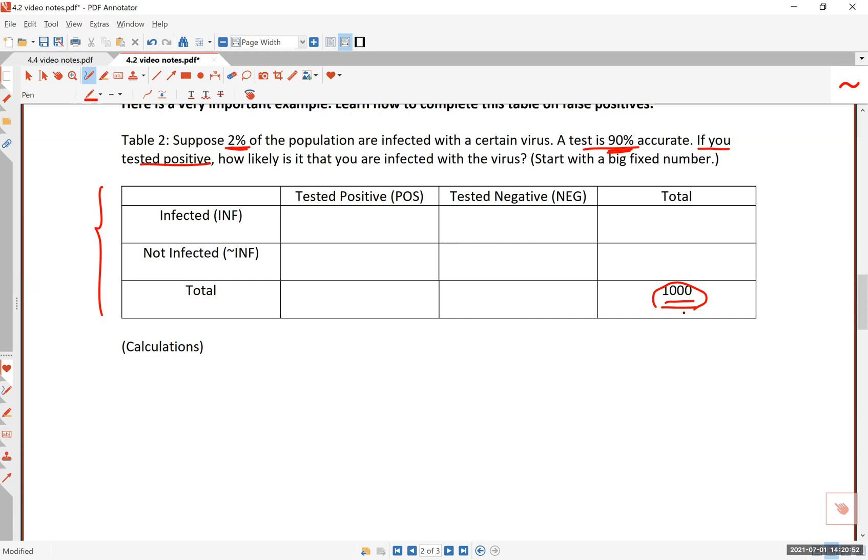I'm going to label each of these boxes A, B, C, D, E, F to identify them. Out of a thousand, 2% of the people are actually infected with the virus. So 2% of a thousand is 20 people, and that number should go to box C because that's the total number of infected people in the group of a thousand.